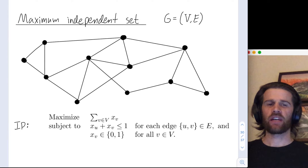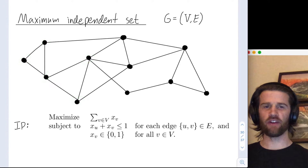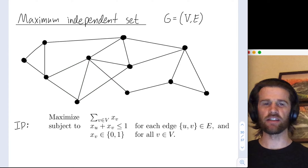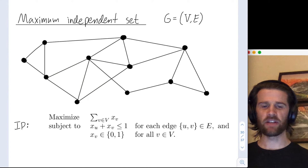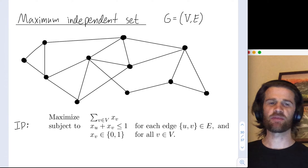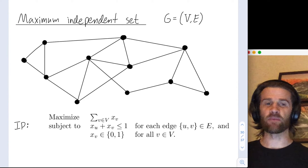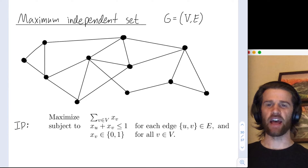Capital G is a graph. It has a collection of vertices and a collection of edges. Capital V is the vertex set, and capital E is the edge set. In the maximum independent set problem, we're trying to find the maximum number of vertices possible in a subset where no two vertices in that subset are connected by an edge.